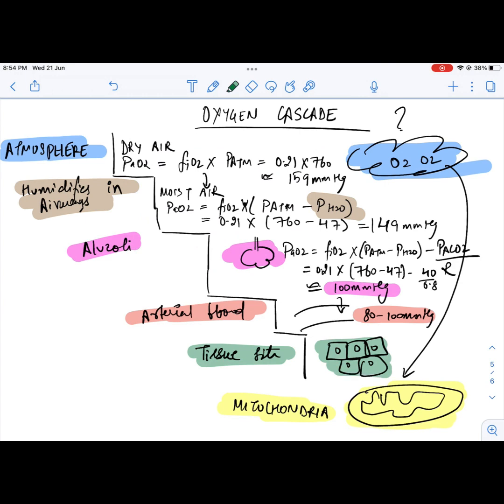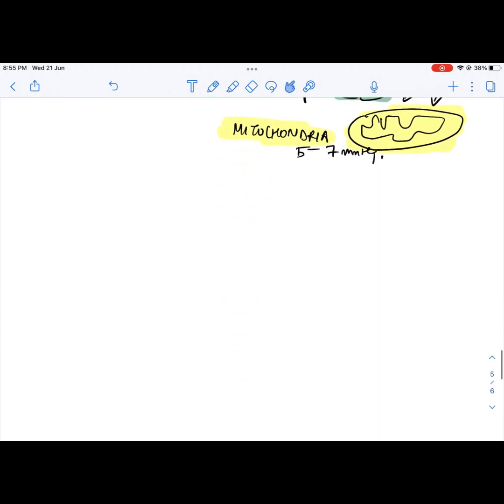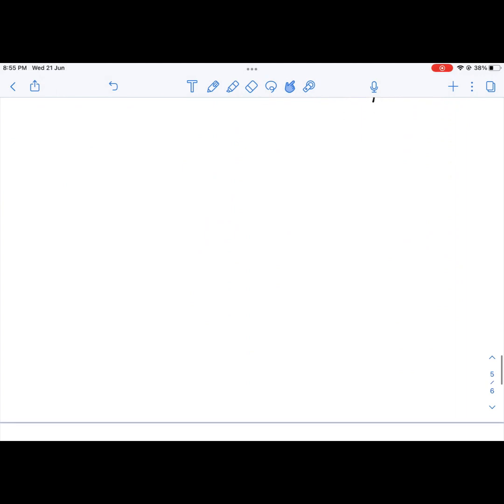This blood is now pumped to the various tissue sites where the partial pressure is 40 mmHg. This oxygen finally enters the mitochondria at partial pressure of 5 to 7 mmHg. This oxygen in the mitochondria is now used to generate energy from food in the form of ATP.